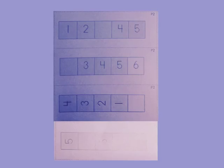What is the missing number on these number paths? Three, two, zero, four.